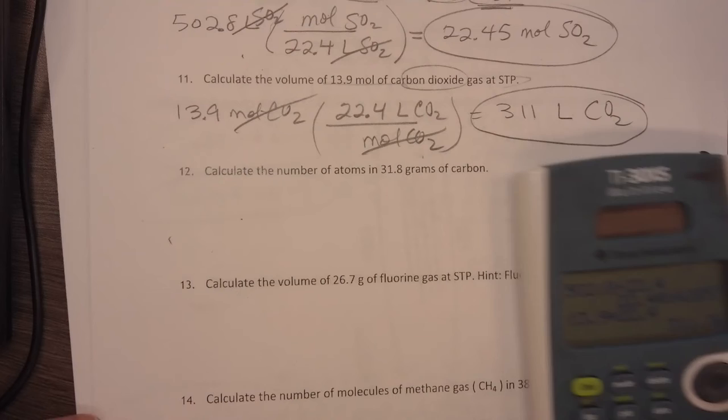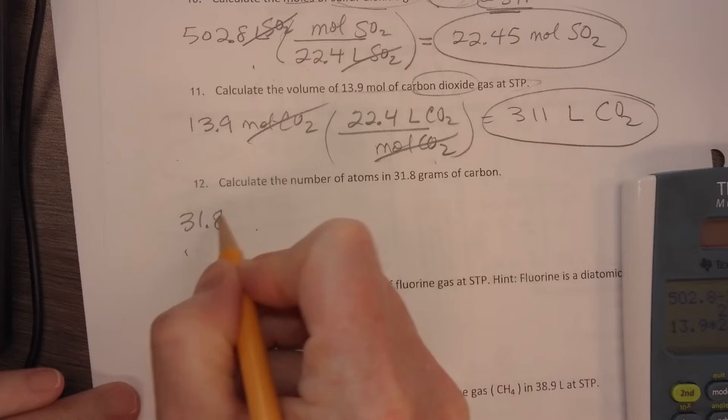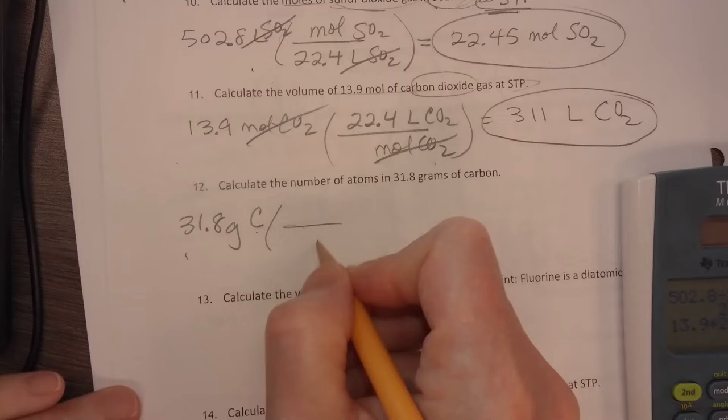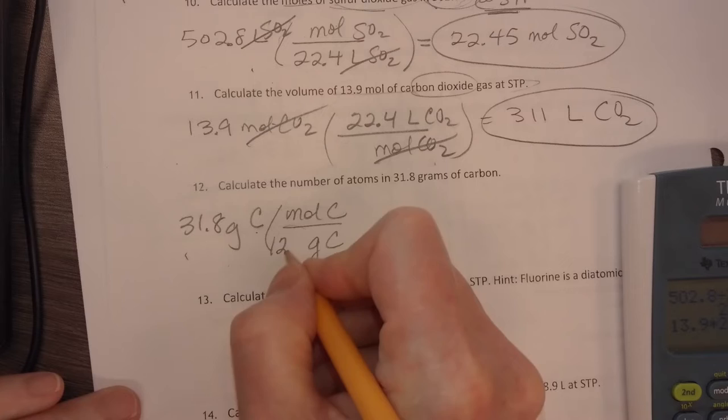All right. Next, it says atoms in 31.8 grams. So if I have 31.8 grams of carbon, I'm going to first have to change it to moles. So I have to divide it by the molar mass.